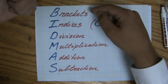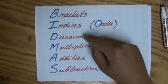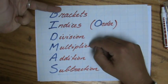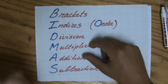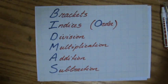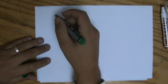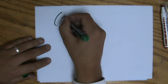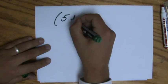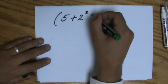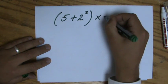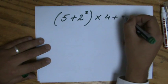So: brackets first, then indices, then division, then multiplication, then addition, and at the very end subtraction. Now let me quickly write down an expression. For instance: 5 plus 2 to the power 3, times 4 plus 1.